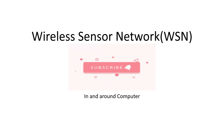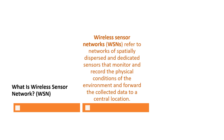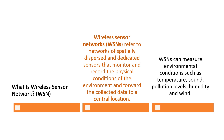In this video, we are going to see what is a wireless sensor network. Wireless sensor network is a different type of network that consists of spatially dispersed and dedicated sensors that monitor and record the physical conditions of the environment and forward the collected data to a central location for further analysis.